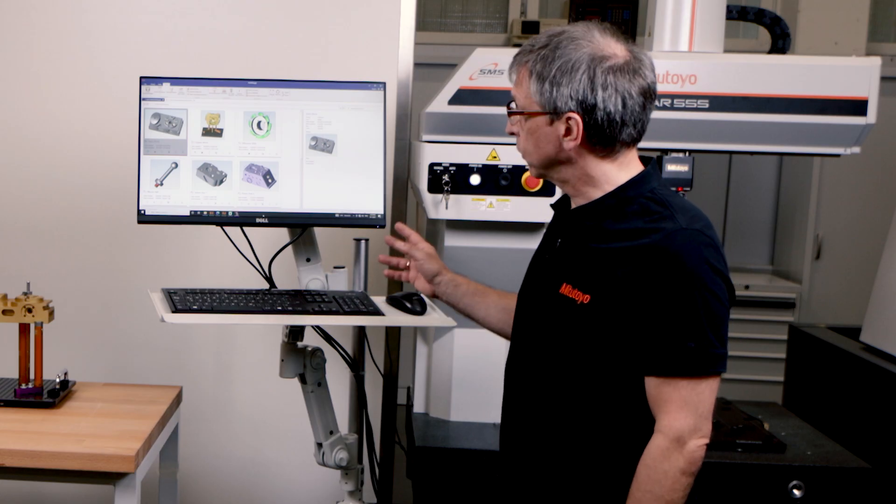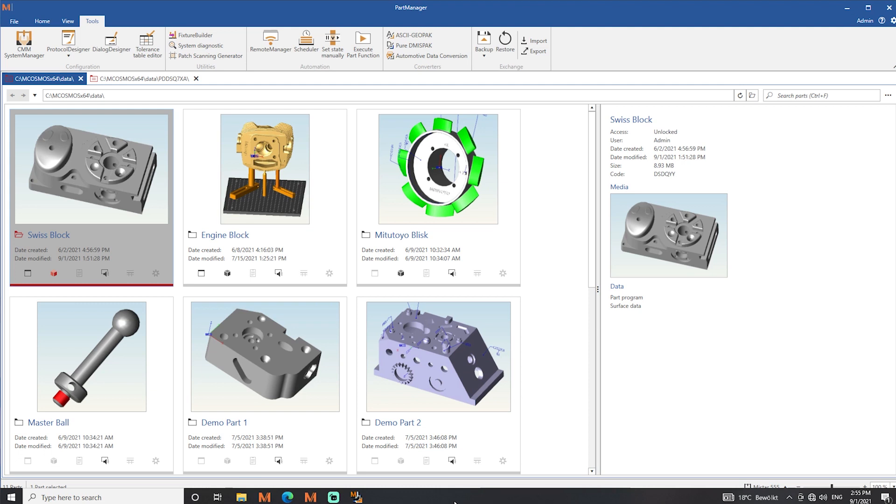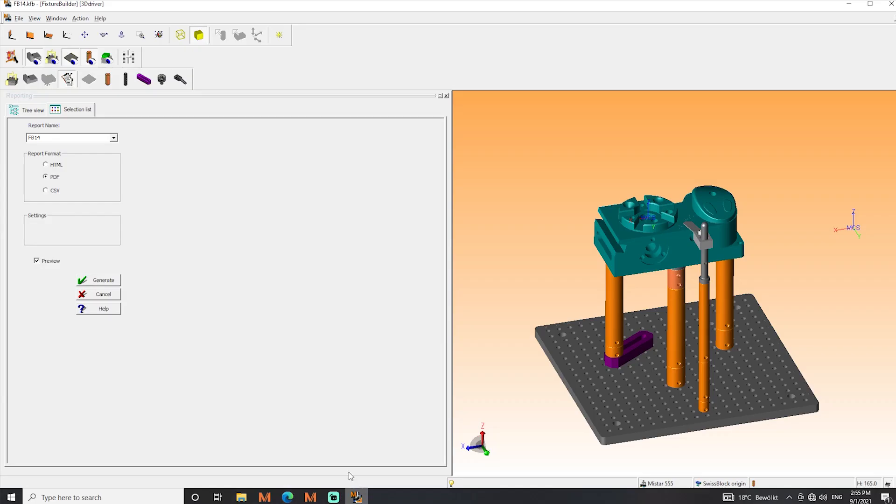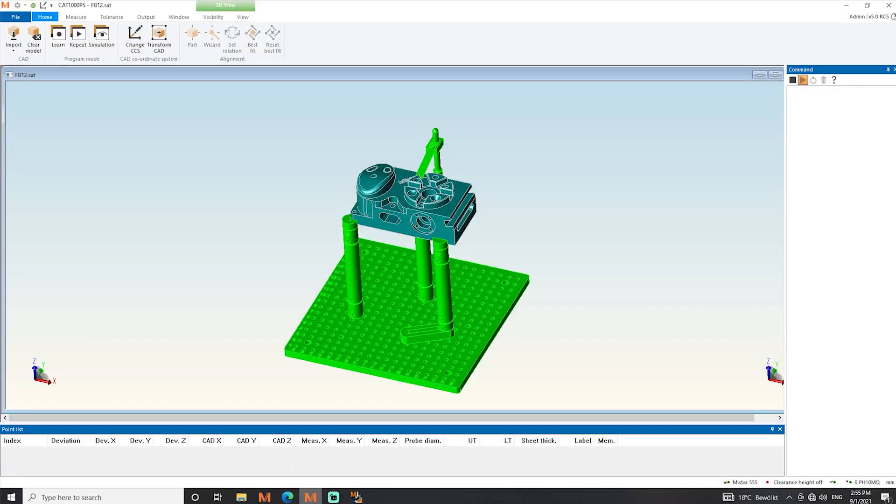Basically, today we will look at how to start up the Fixture Builder and create a fixture just like that. Then we are going to load it into the mCosmos 5 software, so you got all the details from the Fixture Building already in the cut file, and you can go straight ahead to program your part for the measurement on the CMM.